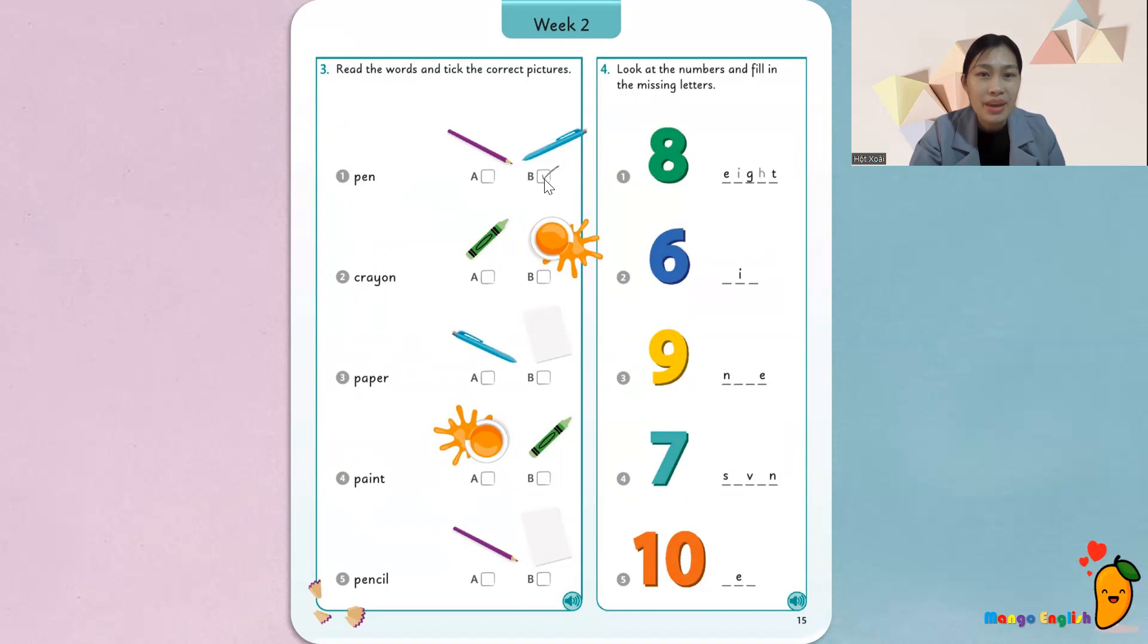từ đầu tiên Pen. Vậy đâu là hình pen? Hình A hay là hình B? Thì đảm bản là hình B. Đây là pen. Vậy thì mình sẽ tick vào nó. Ok, tick. Mình tick vào đấy. Alright.